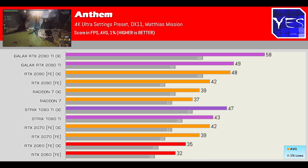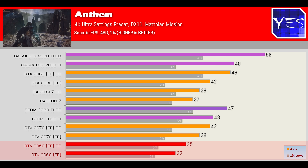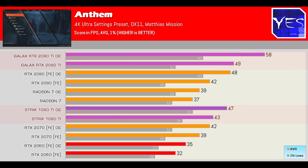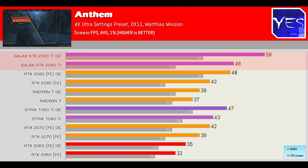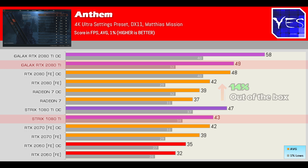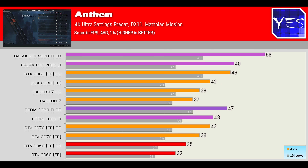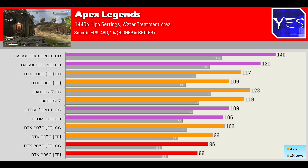In the first benchmark, Anthem at 4K, I put the RTX 2060 in red because it's more mid-range compared to the 1080 Ti and 2080 Ti which are high-end — the 2080 Ti being the best card you can get for performance, albeit at a significantly higher price. Out of the box the 2080 Ti got around 14% extra performance in Anthem, but overclocked it achieved around 23% extra frames, with the Strix OC giving some out-of-box gains that narrowed once we overclocked the Galax 2080 Ti.